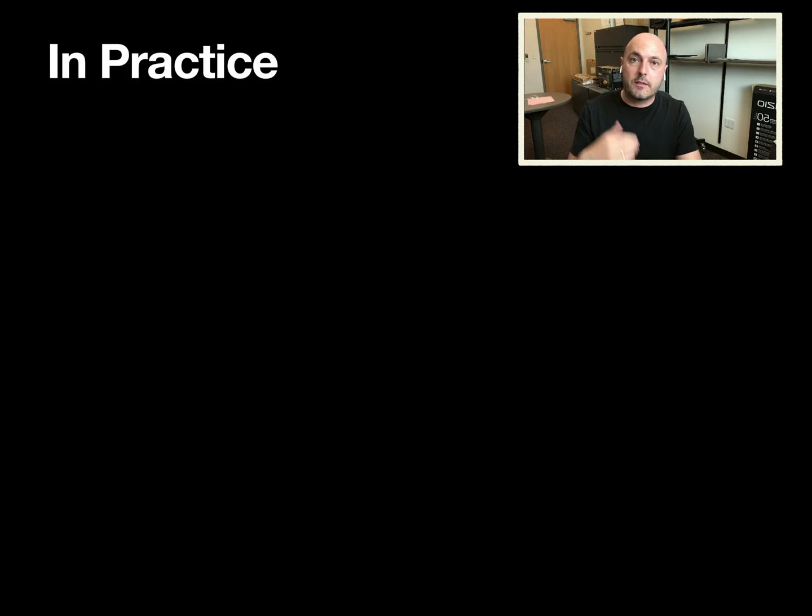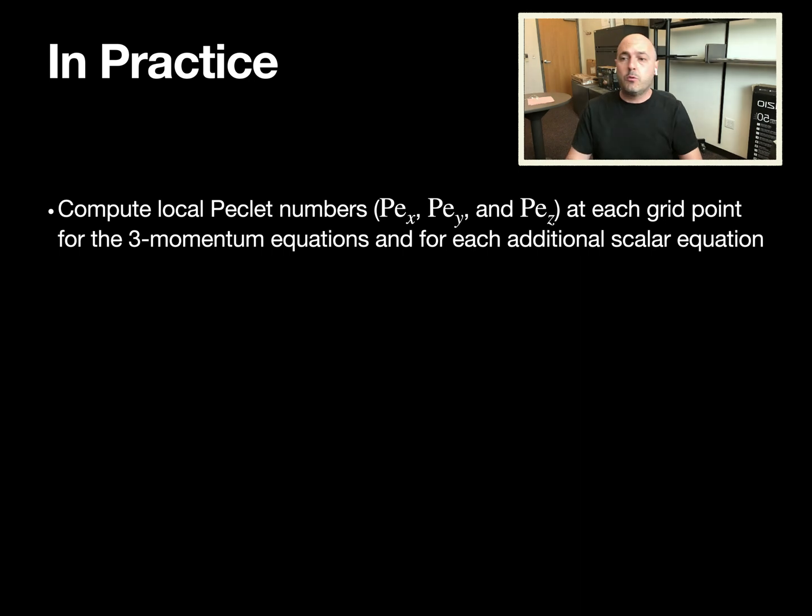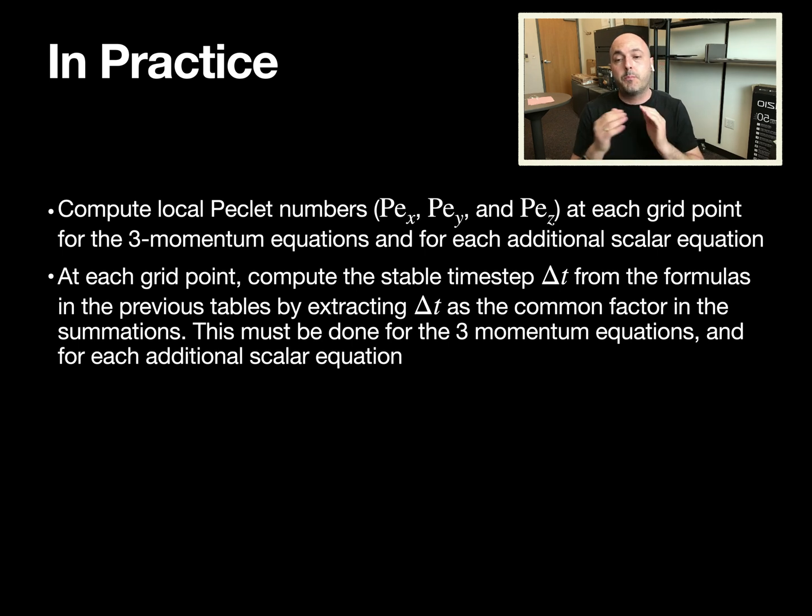In practice, there's some work that needs to be done in your code to implement this. It's not really significant. First, you compute the local Peclet numbers at each grid point for the three momentum equations. So you have U, V, and W. You compute the Peclet numbers or the local cell Reynolds numbers, but then you would also need to compute the three Peclet numbers for each additional scalar equation because those equations might have different diffusion coefficients. Next, at each grid point, you compute the stable time step delta T from the formulas presented in the tables. For the three momentum equations, you're going to have one delta T, but for each scalar equation, you're going to have another delta T.